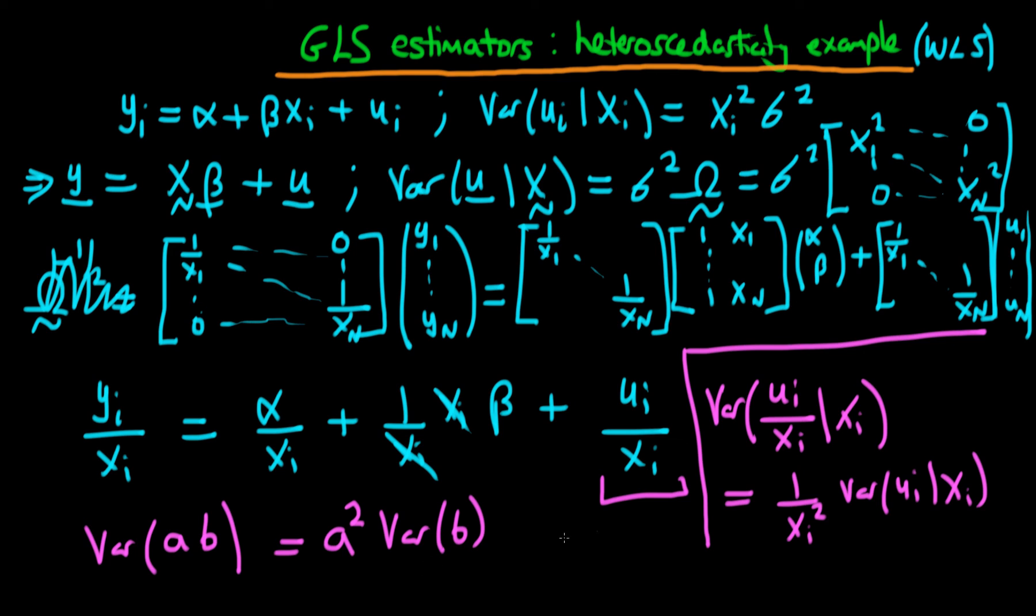So in this case, because we are given xi, xi itself is a constant, so then we square it, and that actually allows us to work out the variance. So we've got 1 over xi squared times the variance of ui given xi. Well, you already know what that is, it's given up here, it's xi squared times sigma squared, so the xi's are going to cancel, and we're just going to be left with sigma squared. In other words, we have a constant variance structure. So we have homoscedastic errors on the transformed system.